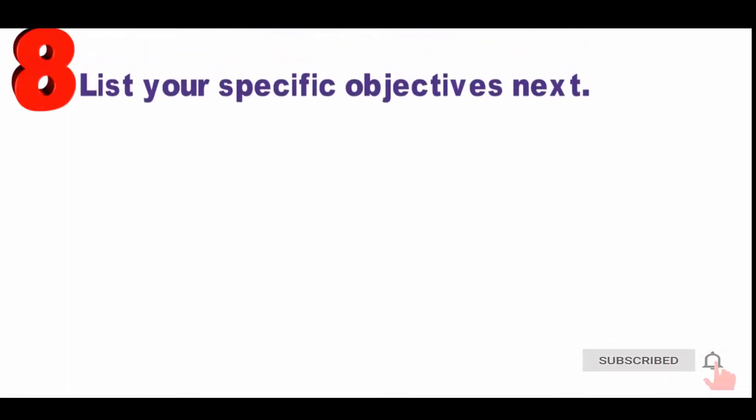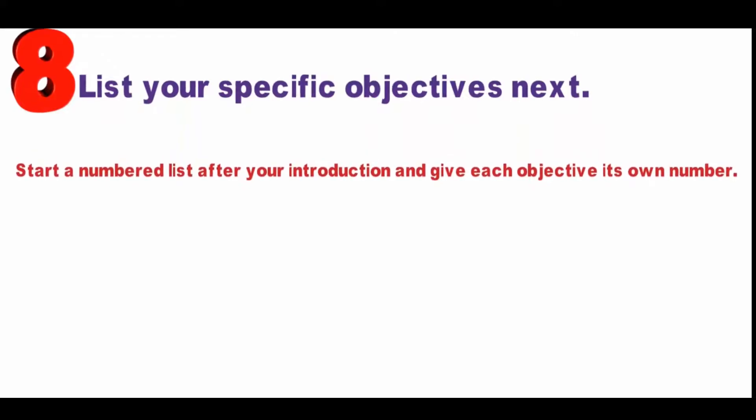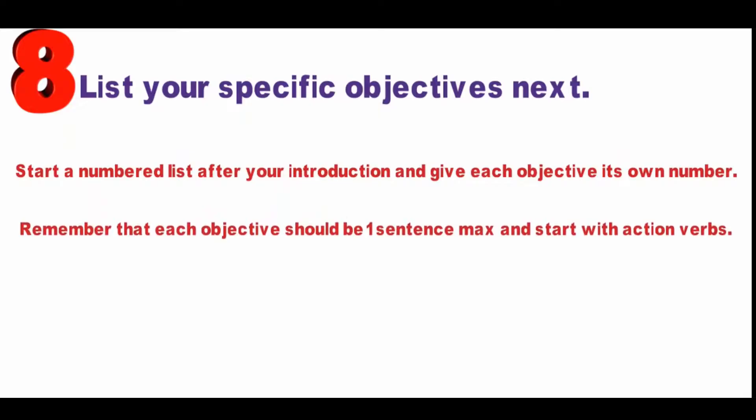Step 8: List your specific objectives next. If you've already decided on your objectives, then this part is easy. Start a numbered list after your introduction and give each objective its own number. Remember that each objective should be one sentence max and start with action verbs. Keep the language clear and concise so readers can tell exactly what your goals are.